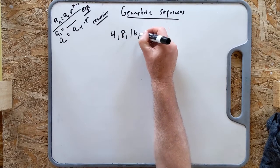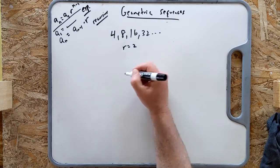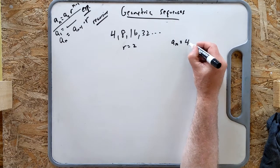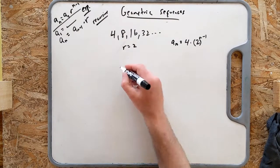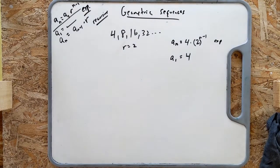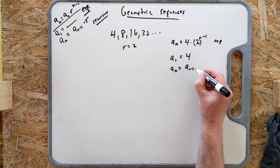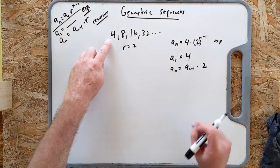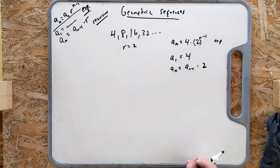The explicit formula for 4, 8, 16, 32 was a_n equals 4 times 2 to the n minus 1. The recursive formula is: a_1 equals 4, and then a_n equals a_(n-1) times 2. So you take the previous term and multiply by 2. This is 4 to start with, then 4 times 2, then 8 times 2, then 16 times 2, etc. — how you would think about it generally.